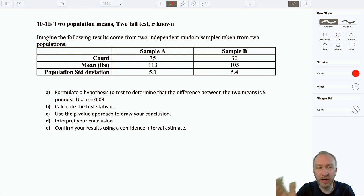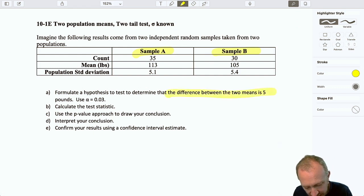I know I have two populations again because I have here sample A and sample B. And it's telling me, in the problem, to formulate a test to see if there's a difference, if it's equal to 5 pounds. Formulate a test to determine that the difference between the two means is 5 pounds. So, this gives us all the information we need to know what kind of test we're going to be developing.